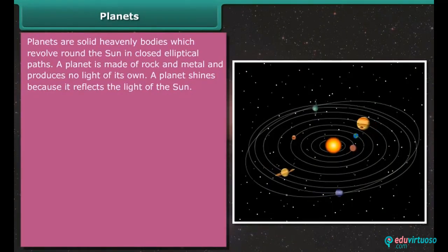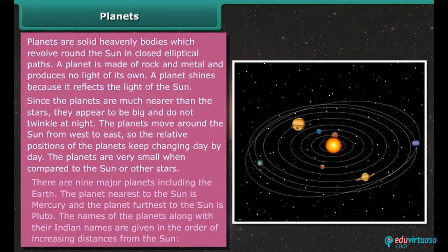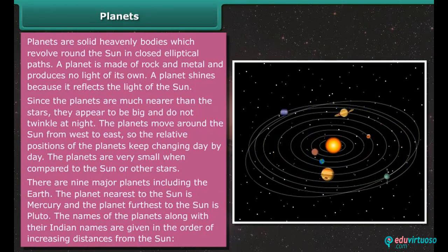Planets. Planets are solid heavenly bodies which revolve around the sun in closed elliptical paths. A planet is made of rock and metal and produces no light of its own. A planet shines because it reflects the light of the sun. Since the planets are much nearer than the stars, they appear to be big and do not twinkle at night. The planets move around the sun from west to east, so the relative positions of the planets keep changing day by day. The planets are very small when compared to the sun or other stars. There are nine major planets including the earth. The planet nearest to the sun is Mercury and the planet farthest to the sun is Pluto.